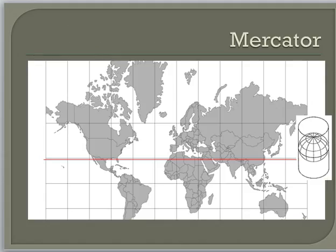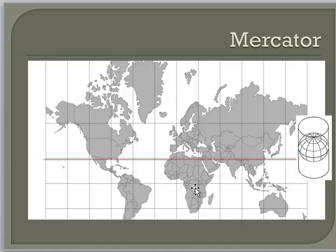The Mercator projection — we looked at that video discussing why the Peters projection was socially more accurate, which is a great exam question. In the Mercator projection, the lines of latitude get farther and farther apart as you go from the equator north and south, and the lines of longitude do not merge. This creates a huge size discrepancy where Africa and Greenland look like the same size, but they're not at all.